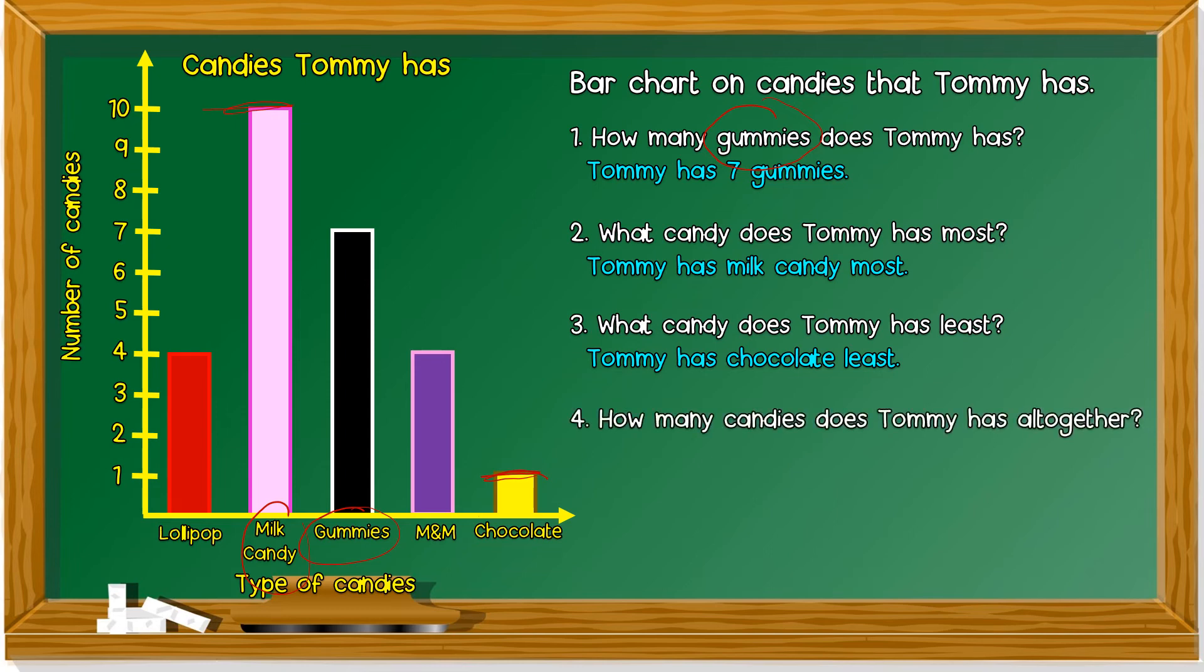Number four, how many candies does Tommy have all together? All together, maksudnya keseluruhan. So we need to add all together. Lollipop, how many? Four. Milk candy, 10. So we add it's 14.